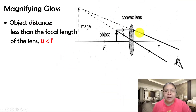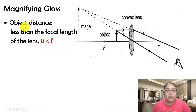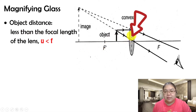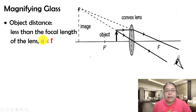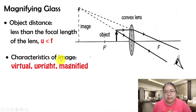This is a diagram for the magnifying glass. Remember, the condition is u less than f. When we draw the lens diagram, the object distance is less than the focal length, so the object is near the lens but still between the lens and f. We say the object distance is less than f.